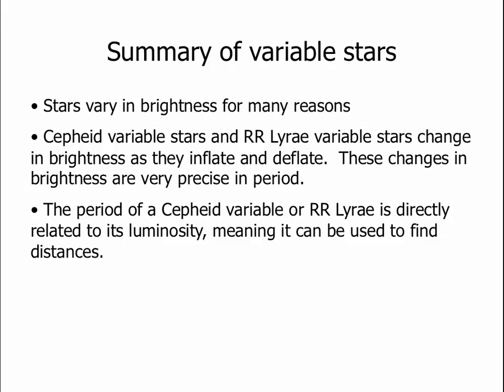So to summarize all we're going to talk about regarding variable stars: there are many different reasons that stars vary in brightness, but two closely related classes of variable stars are the Cepheid variable stars and the RR Lyrae stars, and these change in brightness as they inflate and deflate. These changes in brightness are very precise in period — it takes a given star the same amount of time to complete a cycle each time. The period that it takes these stars to complete their cycle is related to its luminosity, so if we can measure the period, we can get the luminosity. Based on the luminosity and how bright the star appears, we can find the distance to the star.